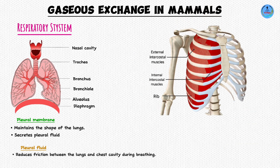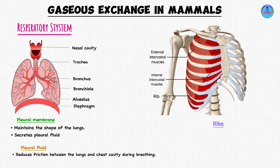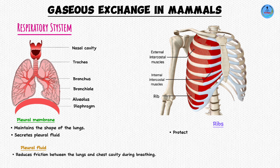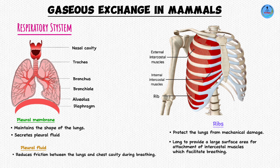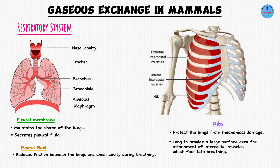The lungs are surrounded by ribs — long, curved bones that form a cage around the lungs. Their first function is protective: they protect the lungs from mechanical and physical damage. Their second function is that they provide a surface area for the attachment of intercostal muscles, which are muscles involved in breathing. The ribs provide a large surface area for the attachment of these intercostal muscles.